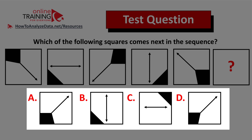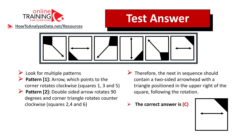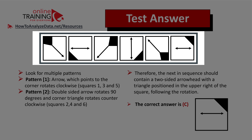Did you figure out the answer? Let's continue to see how we can solve this challenge and get to the correct solution together. As always, look for patterns. There are two key patterns present in these questions. The first pattern is in squares one, three, and five — we see an arrow which rotates clockwise. The first one is in the upper left corner, then in square number three it moves into the upper right corner, and then in square number five it moves to the bottom right corner.